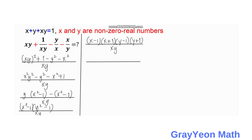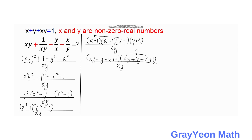Factoring the numerator further, we have (x squared minus 1) as (x minus 1)(x plus 1), and (y minus 1)(y plus 1) all over xy. Multiplying the first and third factors gives xy minus y minus x plus 1. For the second factor, using the given condition x plus y plus xy equals 1, we get 1 plus 1 which equals 2.